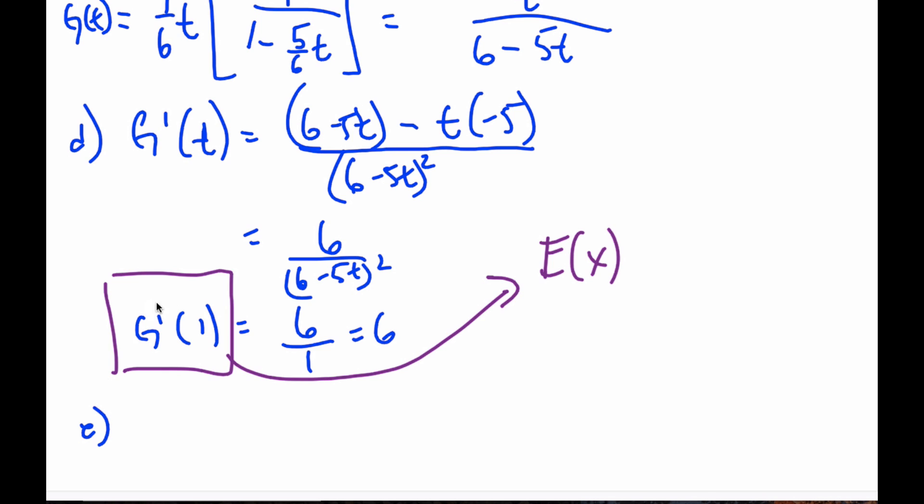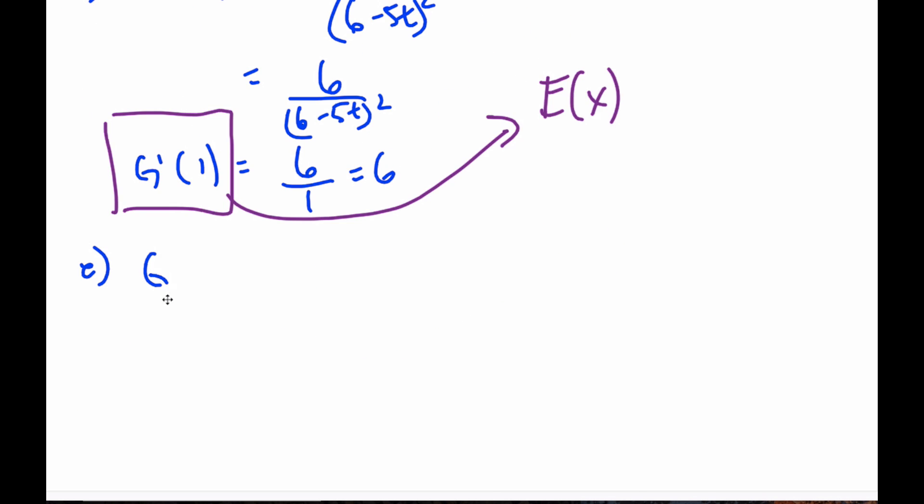Now E part says to find G double prime at one. To do so, we'll find G double prime T working off the derivative here. I'm going to rewrite that, so it's six times six minus five T to the minus two.